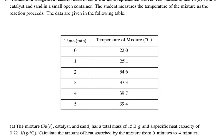Part A: The mixture of iron, catalyst, and sand has a total mass of 15 grams and a specific heat capacity of 0.72 J/g°C. Calculate the amount of heat absorbed by the mixture from 0 to 4 minutes.